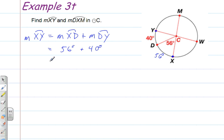When we add those two numbers together, it gives you 96 degrees. So the measure of arc XY is 96 degrees.